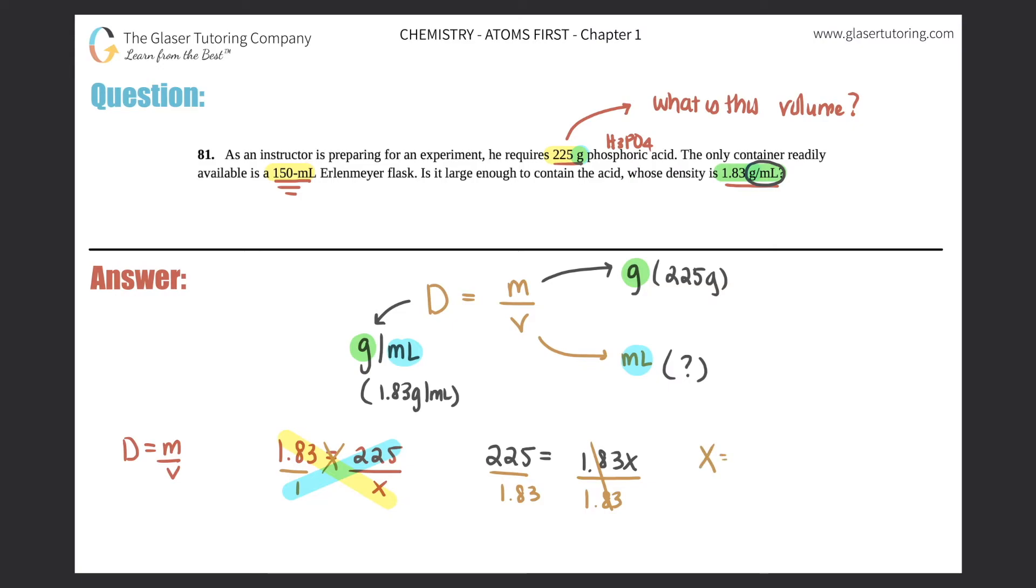And X, which is the volume. So volume of this 225 gram phosphoric acid sample: 225 divided by 1.83 gives you 122.95. But we need 3 sig figs. There's 3 sig figs here and 3 sig figs there, so your answer should have 3 sig figs. Remember your rules for multiplying and dividing.